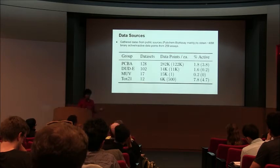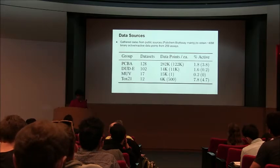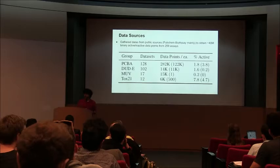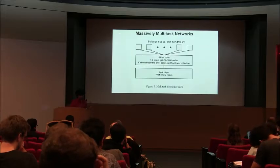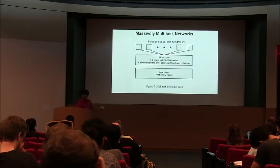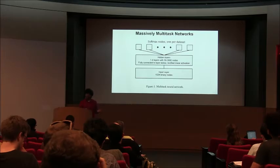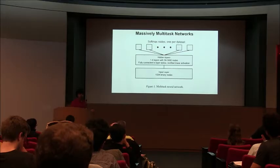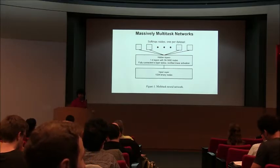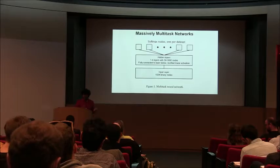We took this approach to featurizing and applied it to whole swaths of public data scraped from online. In total we scraped something like 250 assays, with something like 40 million data points, and most assays had tens of thousands of data points. We then fed all this data into what we called a massively multitasked network — the idea being you build one model that attempts to predict the activity of compounds in all assays available. The deep multitasked networks provide a systematic statistical way of exploiting similarities across assays.